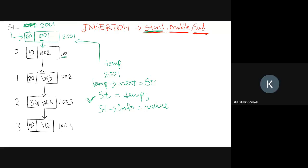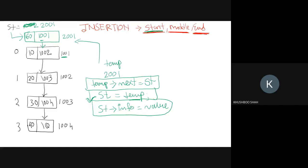So the logic is: first, assign the address of st to temp->next; then assign the value of temp to st; then store the value. Only three statements are needed. The indexing will automatically update — zero, one, two, three, four — you don't need to do anything for the indexing; it will be created automatically.